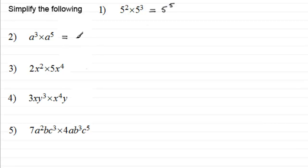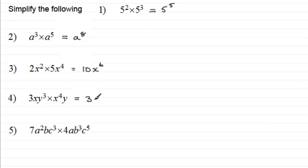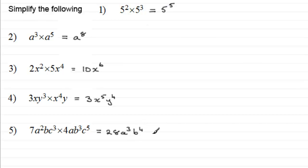A cube times a to the power five — that's a to the power eight. For number three, where we've got two x squared multiplied by five x to the power four, that answer is ten x to the power six. For number four, three xy cubed multiplied by x to the power four y — the answer is three x to the power five, y to the power four. And lastly, question five: seven a squared b c cubed multiplied by four a b cubed c to the power five — that's 28 a cubed, b to the power four, and c to the power eight.